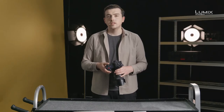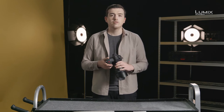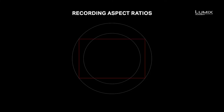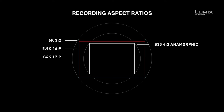The S1H comes equipped with a 24 megapixel sensor that's capable of recording up to 6k resolution in a 3-by-2 aspect ratio, and 5.9k resolution in 16-by-9. On top of these you have the ability to shoot in Cinema 4k resolution — the standard for cinema — UHD 4k, the 16-by-9 standard for television, 4-by-3 Super 35 anamorphic 4k, as well as 1080p full HD modes.